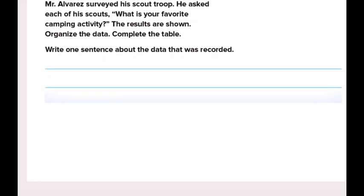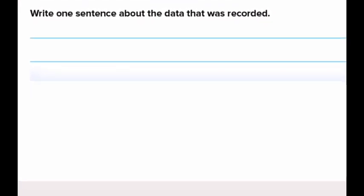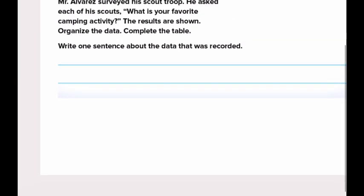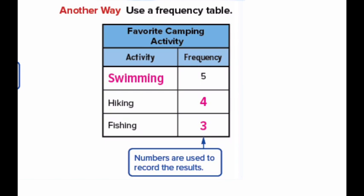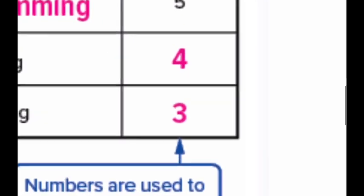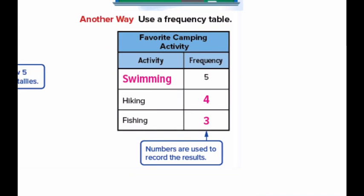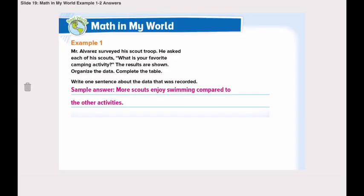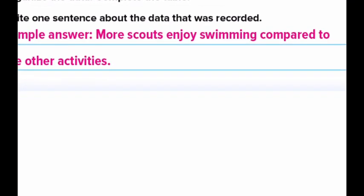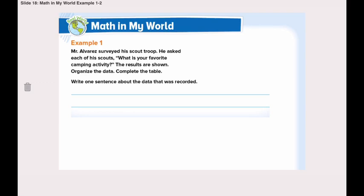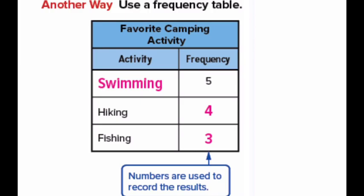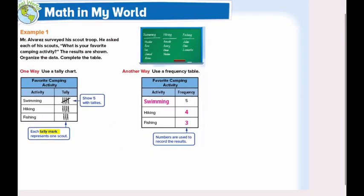Now let's answer the second question in the same example: write one sentence about the data that was recorded. We can say that the least favorite camping activity is fishing, because only three scouts voted for fishing. Or we can say that more scouts enjoy swimming compared to other activities, because five scouts voted for swimming — that's why it's the most favorite camping activity.